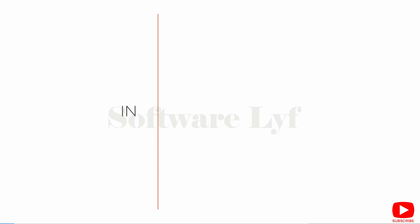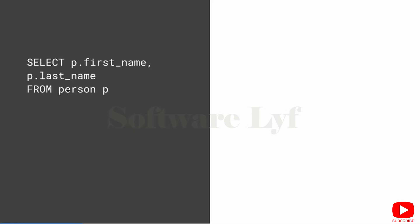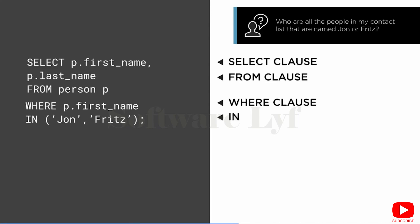IN is the next operator I said I would cover. IN is kind of like a multi-value operator. Here's our question: who are all the people in my contact list that are named John or Fritz? Of course, we could put this together with a multi-expression WHERE clause with two expressions joined by OR. IN allows us to simplify a more complex expression — instead of having WHERE first_name = 'john' OR first_name = 'fritz' OR first_name = 'brian', or imagining you want certain states like WHERE state = 'california' OR state = 'florida' OR state = 'new york', we can replace those with the IN clause.